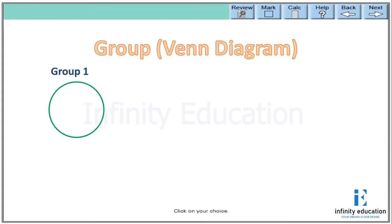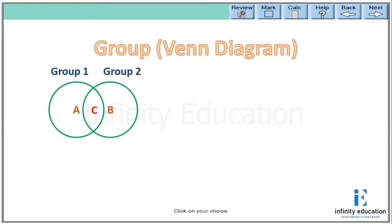Suppose there is a group, and in that group A number of people are there. And there is one more group, group two, and B number of people belong from them. It may be possible there are certain number of people who belong from both the groups — we are considering that as C. And also it may be possible that certain people do not belong from any of the groups — we are considering them as D. So now if I ask you, what will be the total number of people?